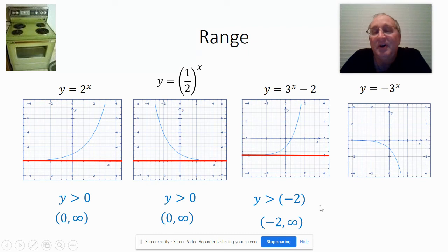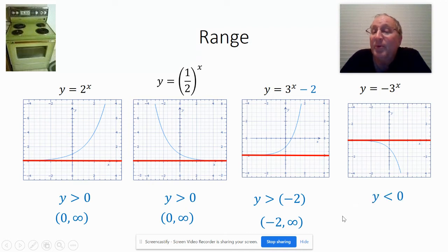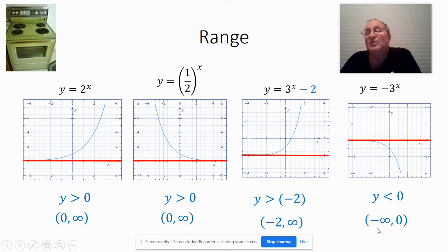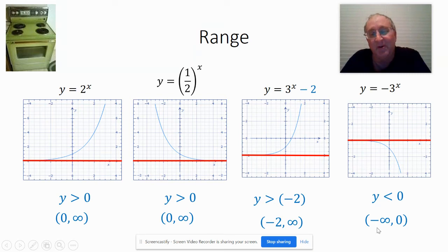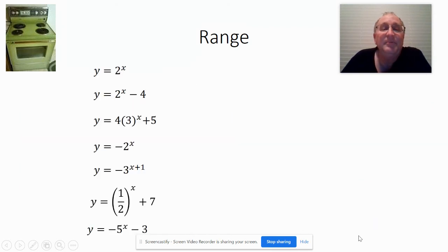Let's look at this last one. What's different about it? The asymptote is still at 0, but instead of being above it, it's below. So we're talking about y values less than 0. And I'm not going to write 0 to negative infinity — you have to write negative infinity to 0. This is the mistake people make: you have to write the smallest number first, and negative infinity is a lot smaller than 0.